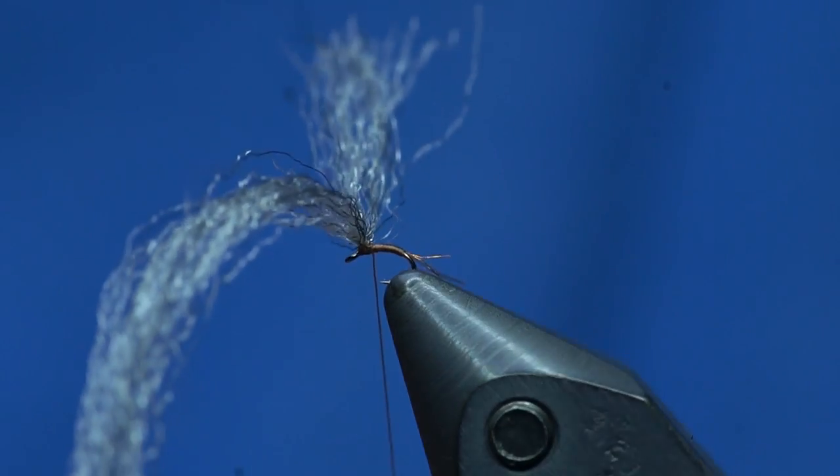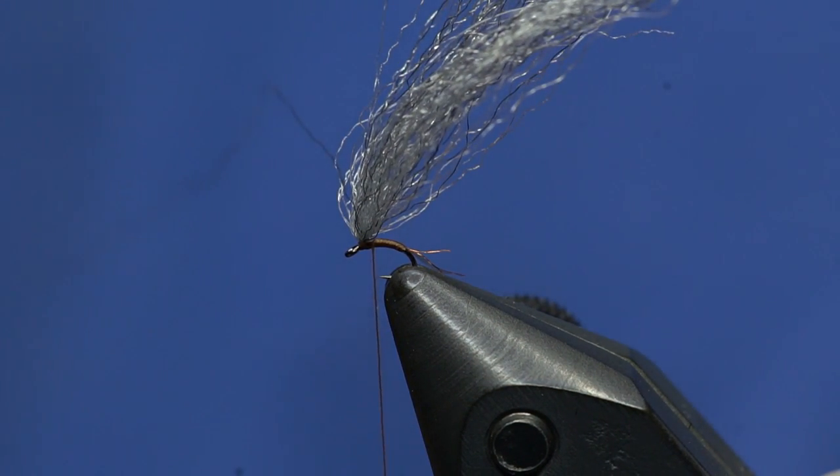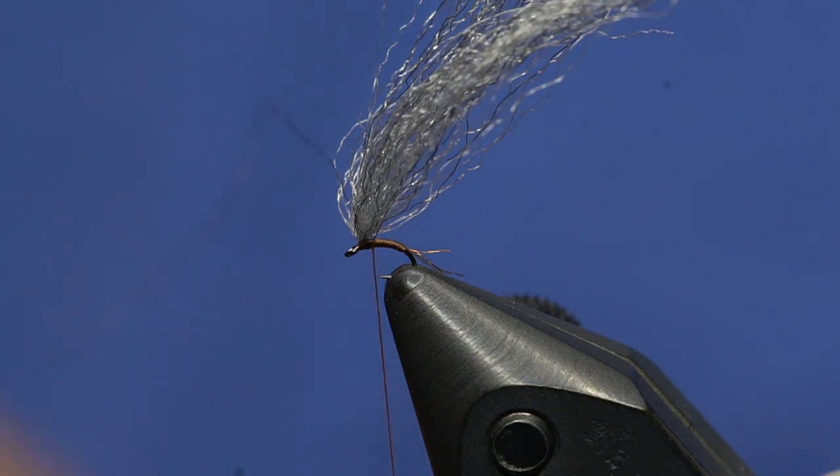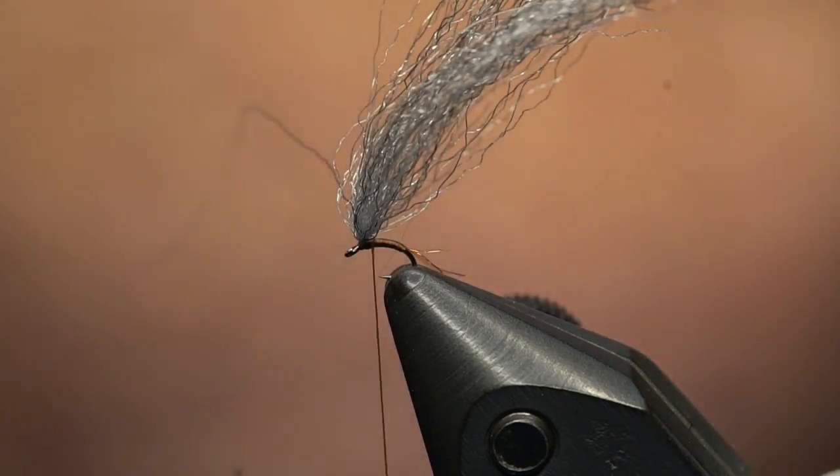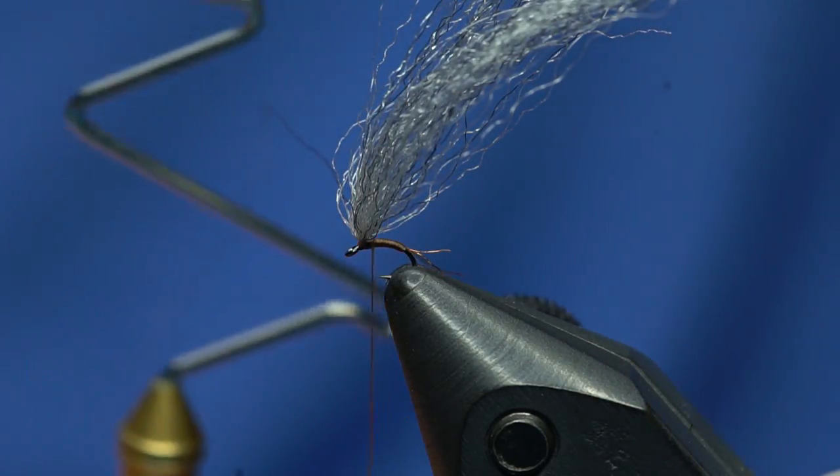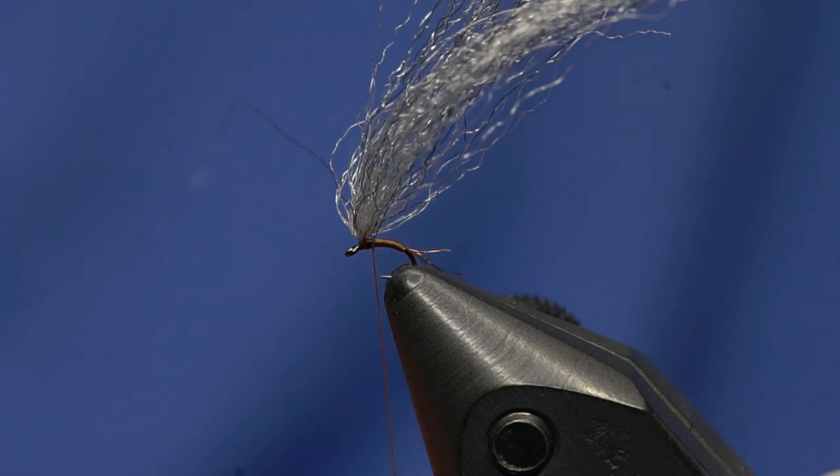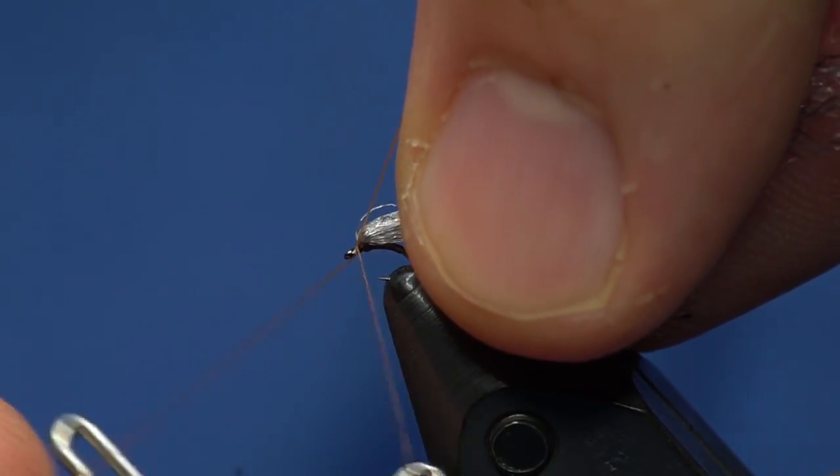At this point, before I trim the wing, I'm going to whip finish the fly. Digging through Curtis's bag of crap, we have this little TMC midge whip finisher. It looks huge compared to this fly, so I'm just going to come in here and whip finish. The eye of this hook makes it really easy to whip finish and not crowd the eye.